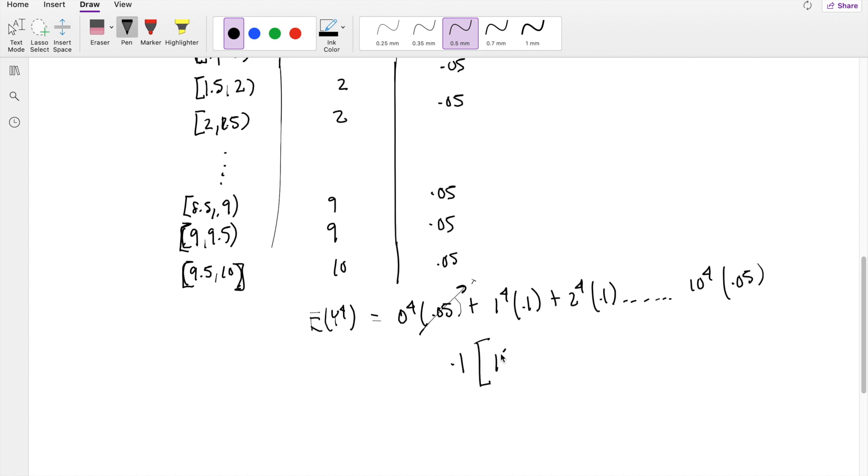This gives us 0.1 times (1^4 plus 2^4 plus 3^4 and so on until 9^4), plus 0.05 times 10^4. This equals 2,033.3.